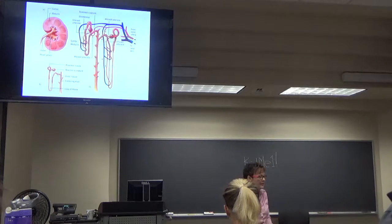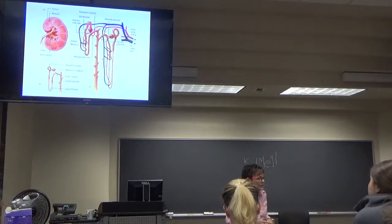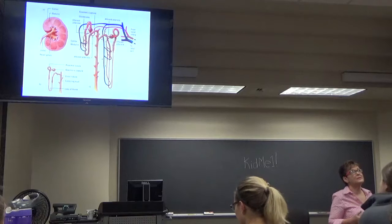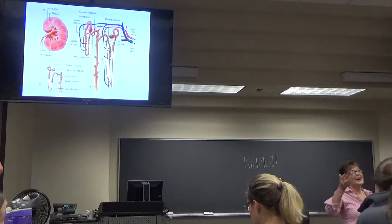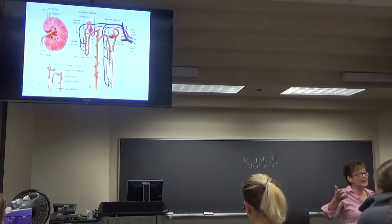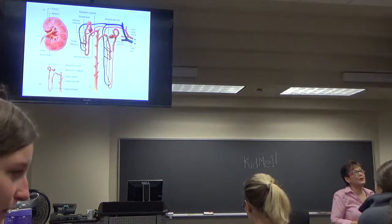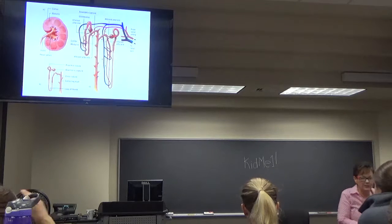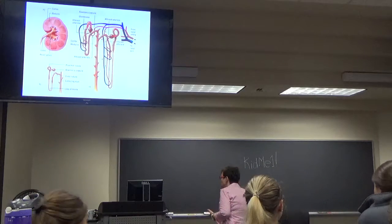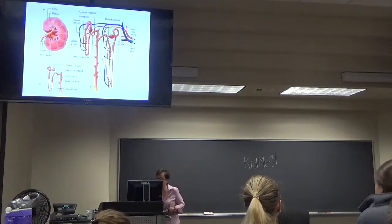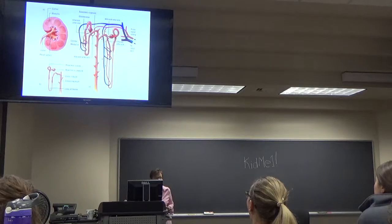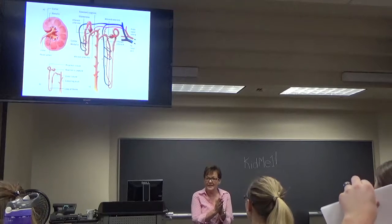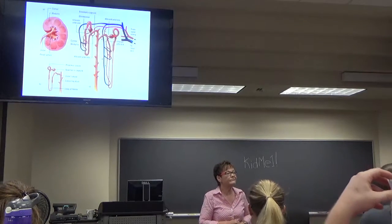Then we move into the loop of Henle where we can concentrate the urine. We have the ascending part of that loop and eventually it moves into the distal tubule, and the distal tubule moves into collecting ducts. What you might notice about the collecting ducts is that multiple nephrons feed into those. So if you have a problem in one collecting duct, multiple nephrons are affected.